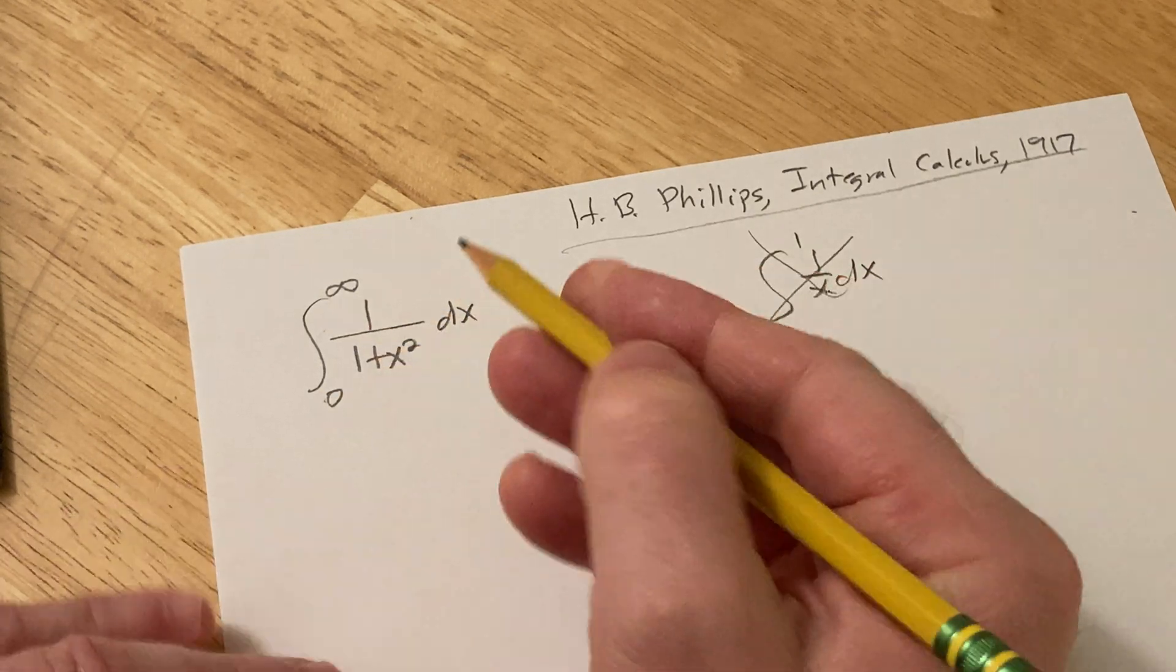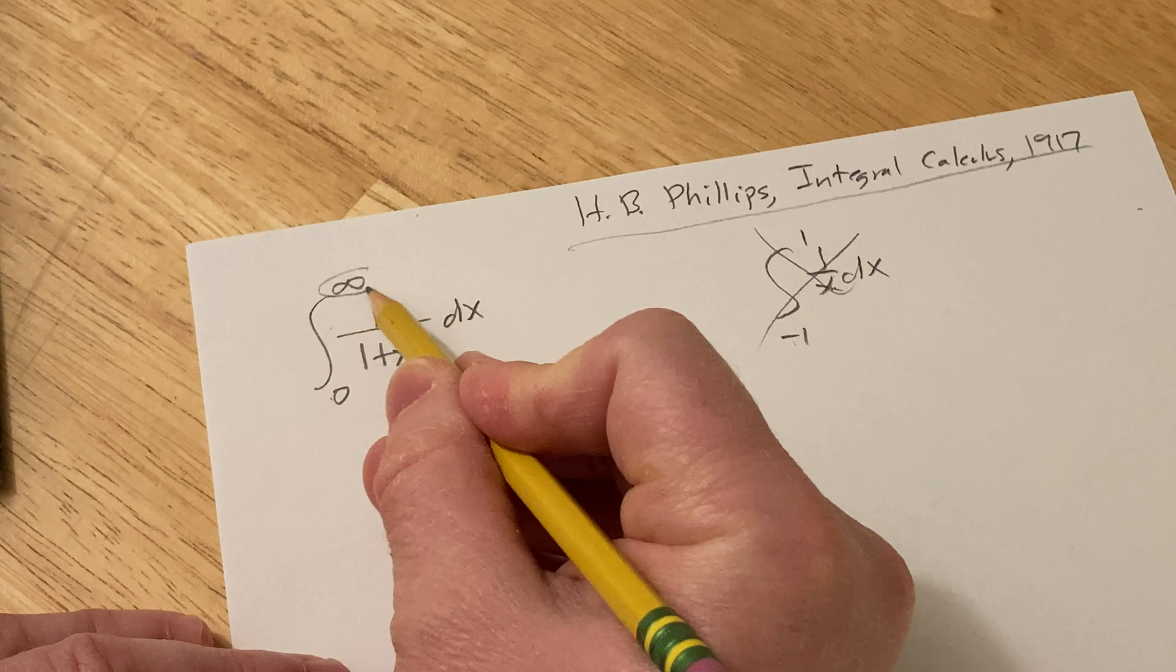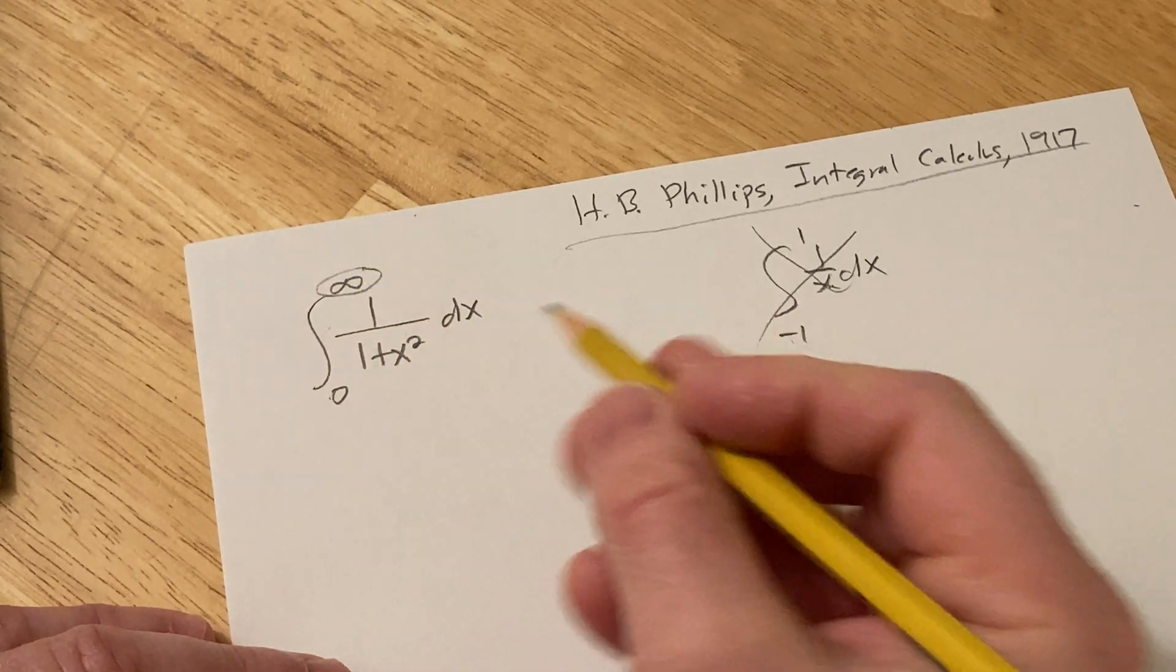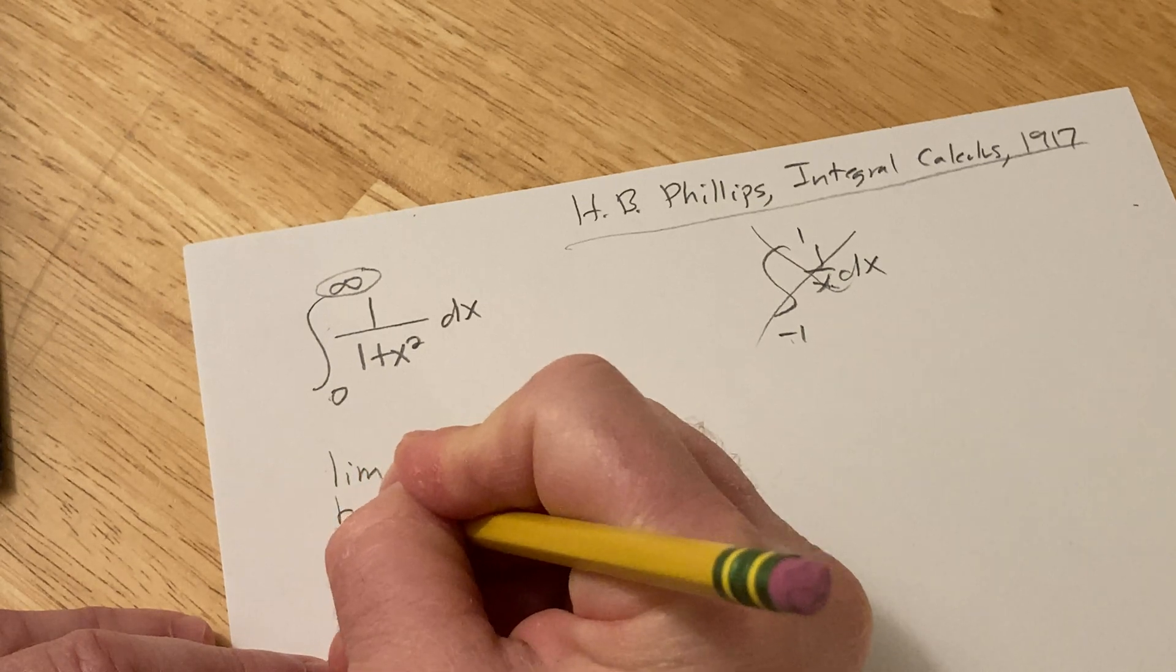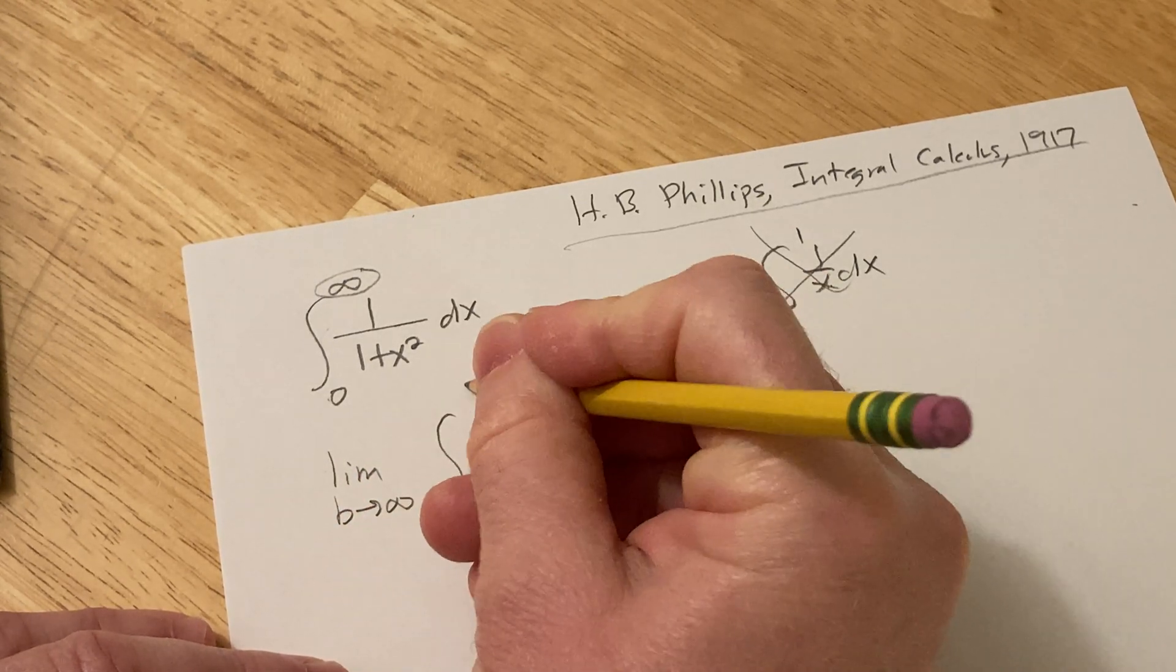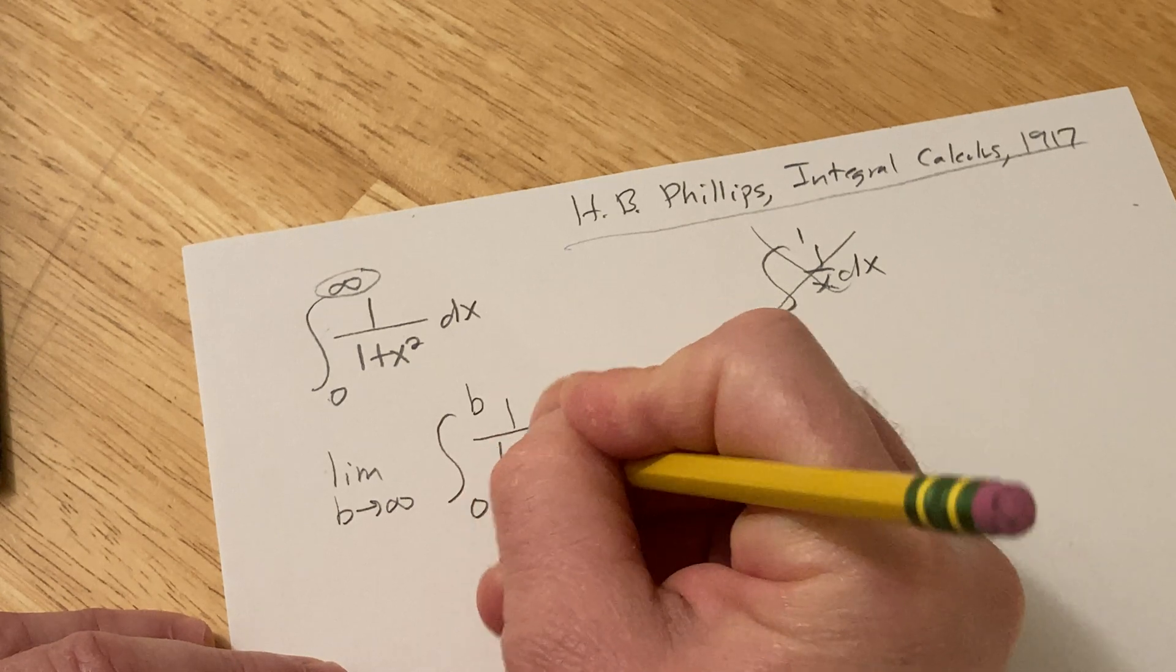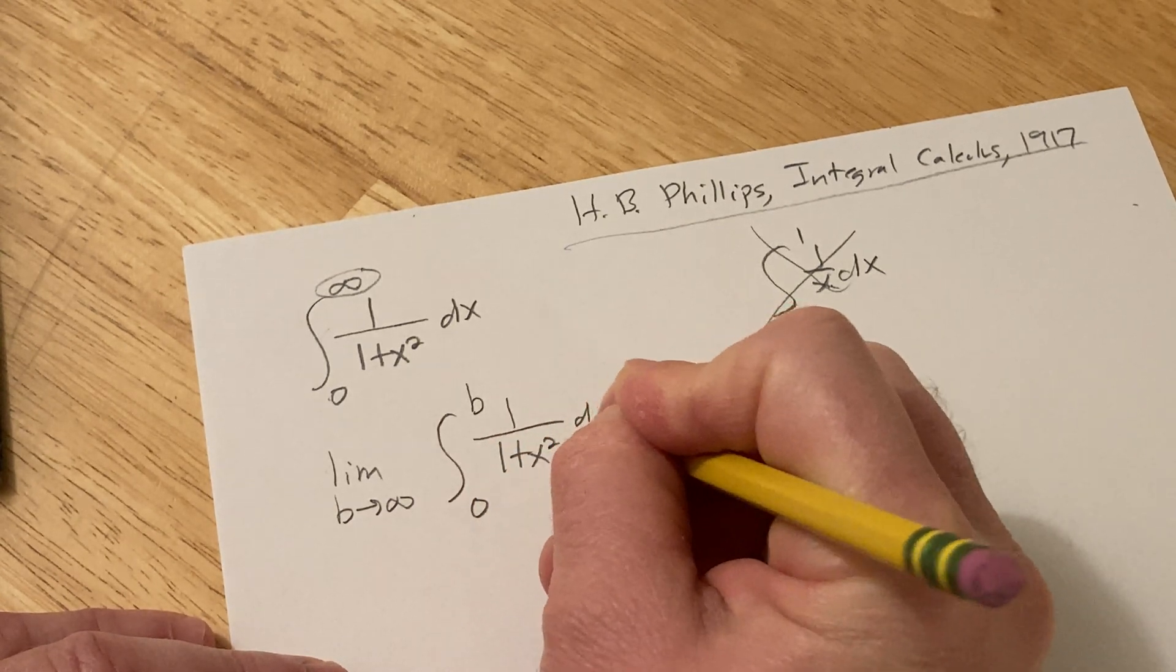so this integral here, the first thing that you're supposed to do is replace the infinity with a variable. So I like to use the letter B. So I'll write limit B approaches infinity, and then we go from 0 to B, and then 1 over 1 plus x squared dx.